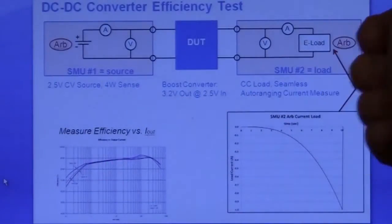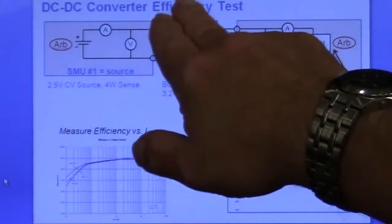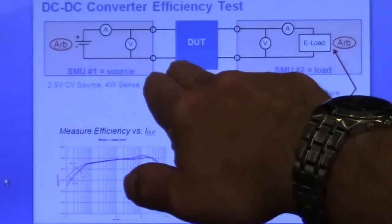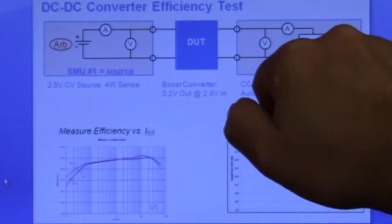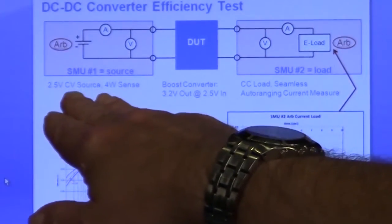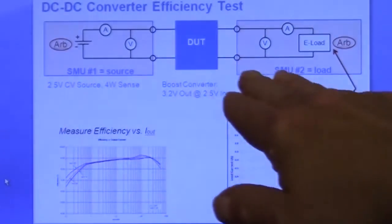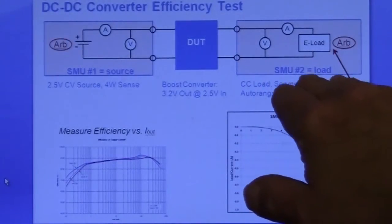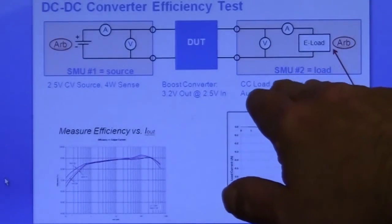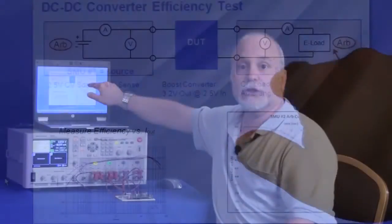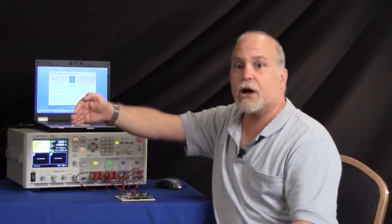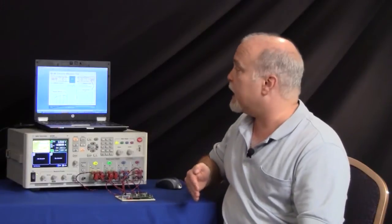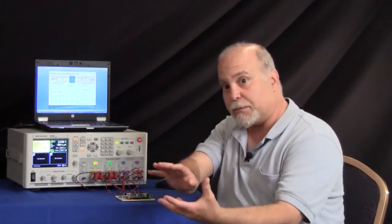So let me refer you to this block diagram here. What we have is the DC to DC converter. This is a 2.5 volt in, 3.2 volt out operating at about 1 amp. So the input side is an SMU set to 2.5 volts constant voltage. The output side is the e-load set to 3.2 volts, but it's going to be sweeping the load current from low current of about 0 amps up to full current of 1 amp, and then we'll be plotting the input power versus the output power to measure efficiency.